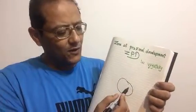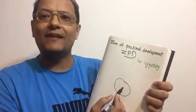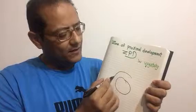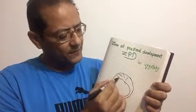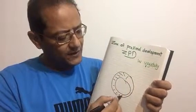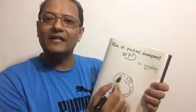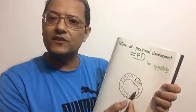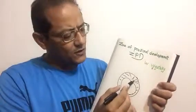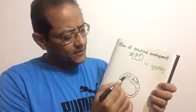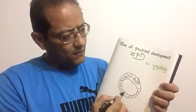So this is the zone where our students can learn. The second zone is what our students can learn but they need scaffolding — they need assistance as teachers, as mentors, as trainers. So this is the zone of proximal development.